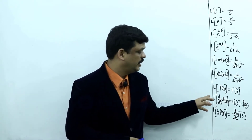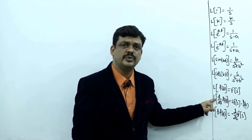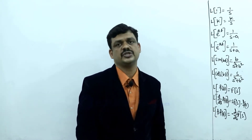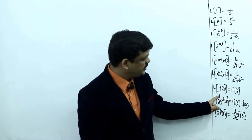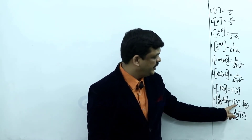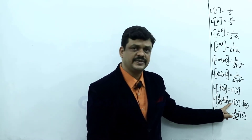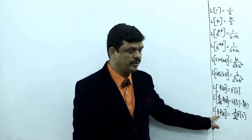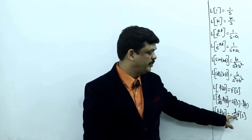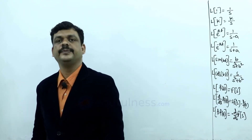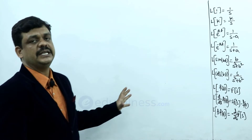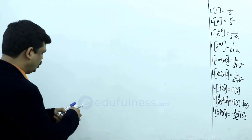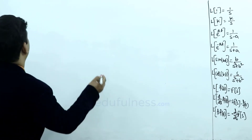Two more properties are also important here: one is differentiation in the time domain, and the other is differentiation in the frequency domain. Differentiation in the time domain corresponds to multiplication by s in the frequency domain, and multiplication by t in the time domain corresponds to differentiation in the frequency domain. Using these, we will solve a few problems.